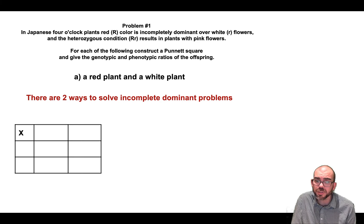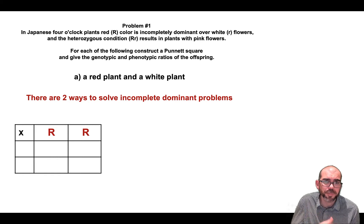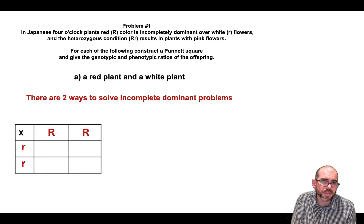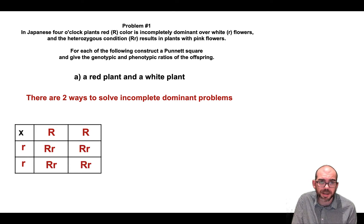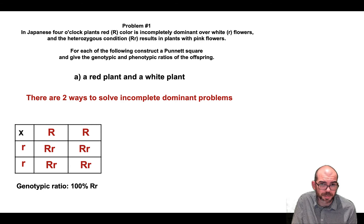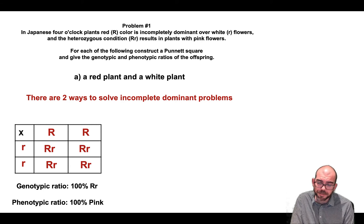One way is to use the system you've learned before. I'm going to have uppercase letters dictate what would normally be dominant — uppercase R for red — and we can use a lowercase of the same letter, little r, to represent the white. Now, that's not completely accurate because we don't have true dominance or recessive here. If we do a cross, you'll see that we have 100% big R, little r as our genotype, so 100% heterozygous. And our phenotypic ratio is 100% pink.